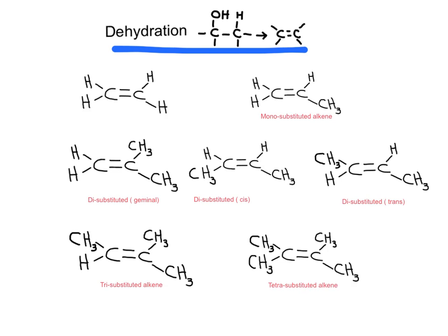Now we need to look at the reaction of dehydration of alcohols. The product of dehydration will be an alkene. Before we look at the reaction, it's important to understand that the product of the reaction will depend on what kind of alcohol we have. The product will be an alkene, and the alkene can be a monosubstituted alkene. We need to describe what is the meaning of all of these different types of alkenes.